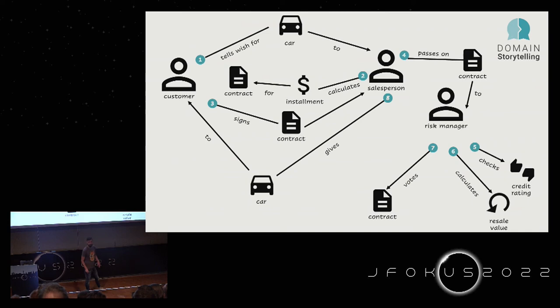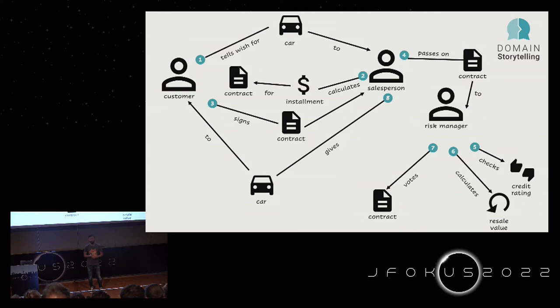What you can see here is your first domain story — a very simple pictographic language used to draw diagrams to understand what's happening in the domain. The domain is the space of the real world that we are building software for, or in other words, the problem we are going to solve with our software. The fancy word for that is 'domain.'